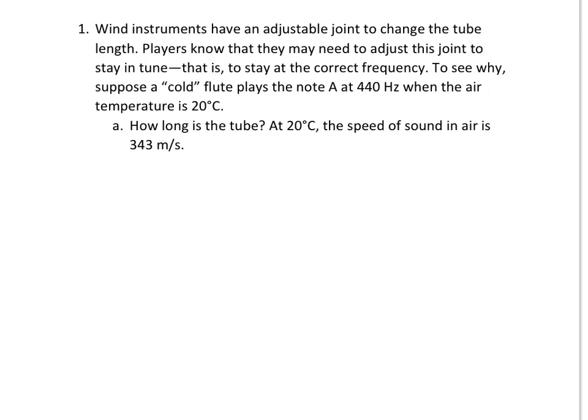Let's do an example to see how this all works. We'll do a little bit of practice with this and actually drawing out different standing sound waves. But let's just look at the numbers and see how those work out. Wind instruments have an adjustable joint to change the tube length. Players know that they may need to adjust this joint to stay in tune, that is to stay at the correct frequency.